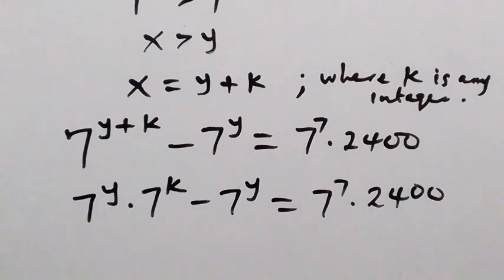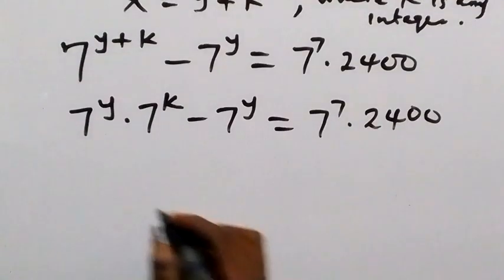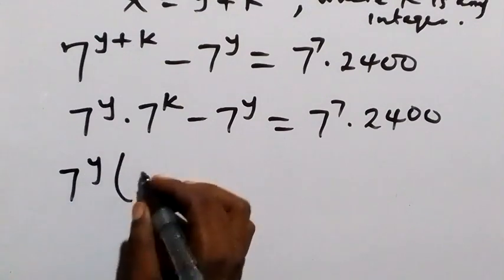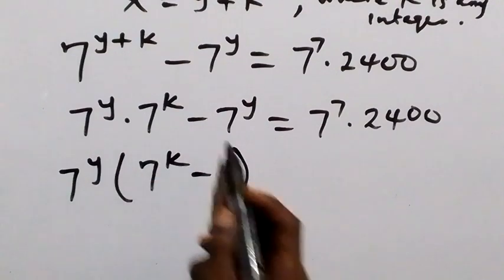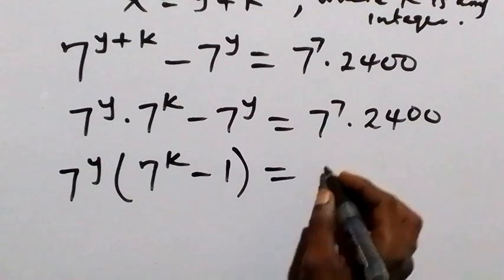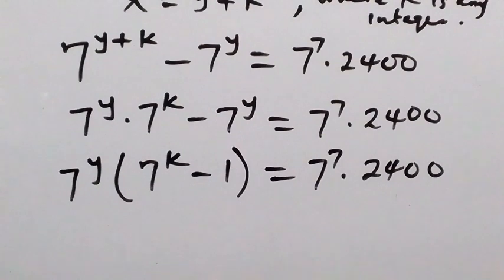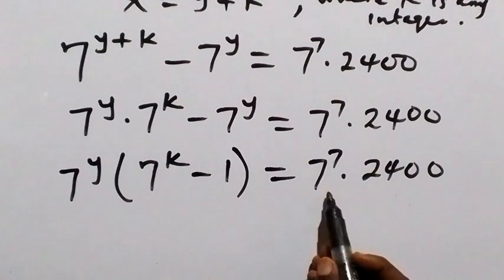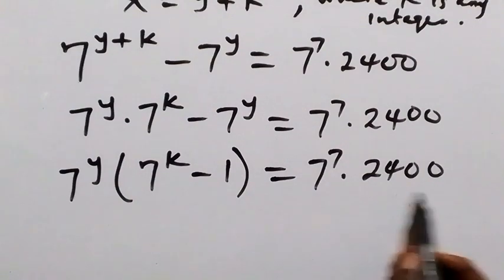From here, we take 7 raised to power y out as a common factor, giving 7 raised to power y into bracket 7 raised to power k minus 1, equals 7 raised to power 7 times 2400. Then we can equate 7 raised to power y to 7 raised to power 7, and 7 raised to power k minus 1 to 2400.